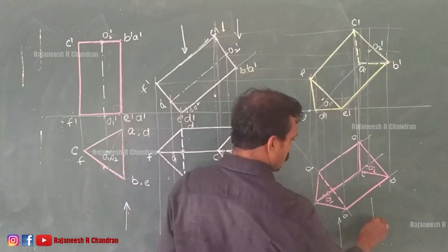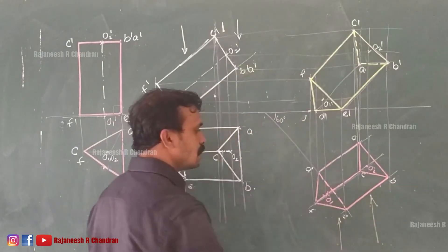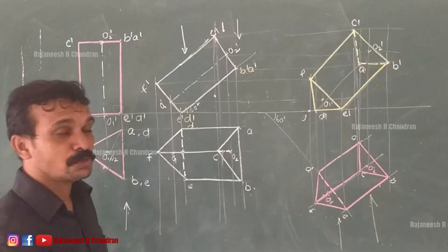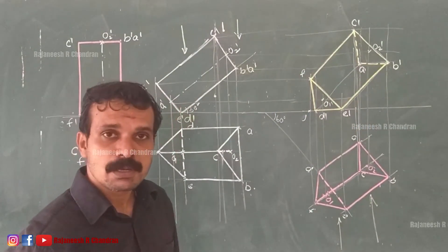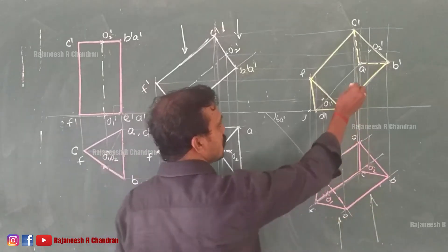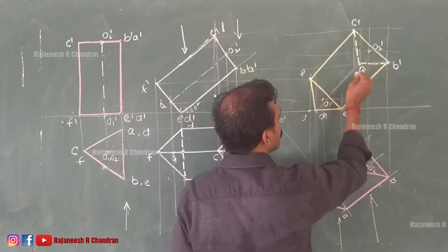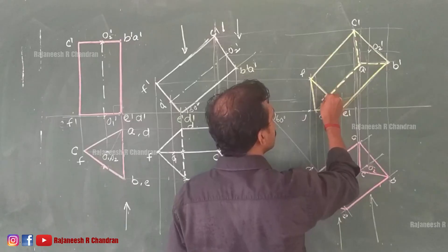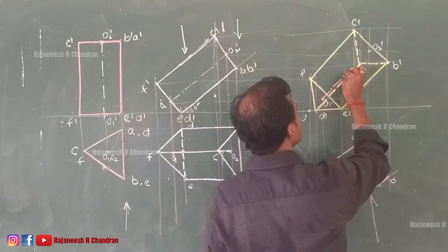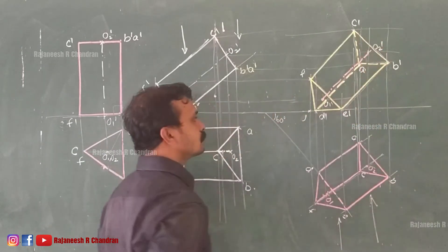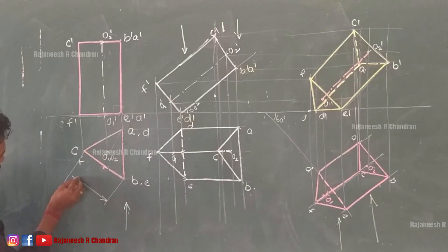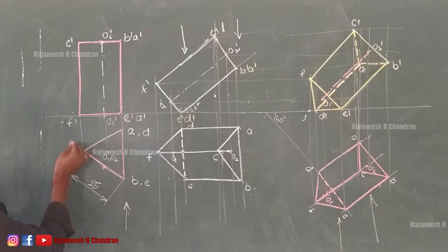Now we know that we are observing from here — edge BE is nearer, it is already visible. We also know that for an invisible corner, the lateral edge connecting an invisible corner may be invisible. Since A is an invisible corner, that edge will be invisible. So the edges are supposed to become invisible, and this is a part of the axis.